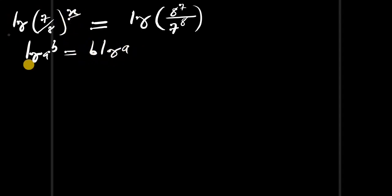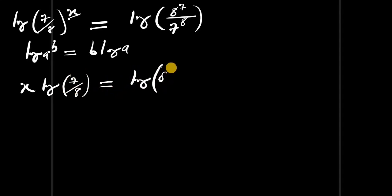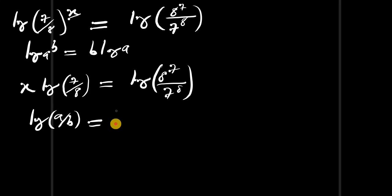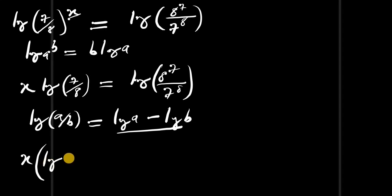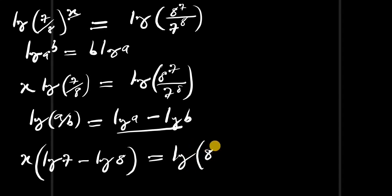So x comes in front and we're going to have x times log of 7 divided by 8. Also applying the identity log of a divided by b equals log a minus log b, we get x into log of 7 minus log of 8 equals log of 8 power 7 minus log of 7 power 8.